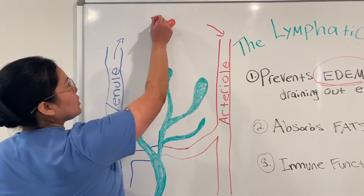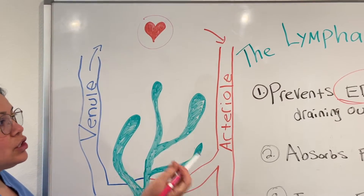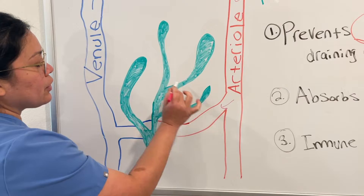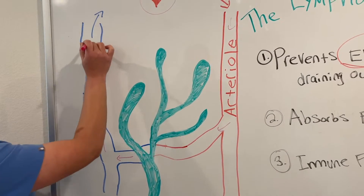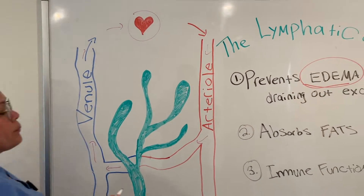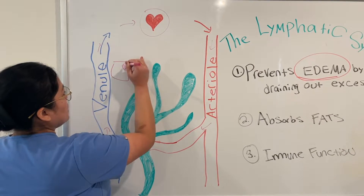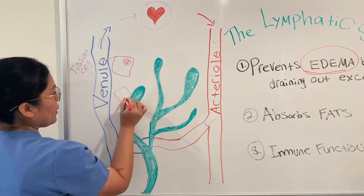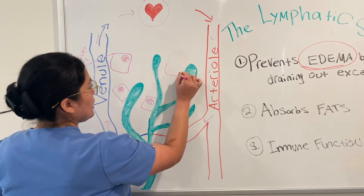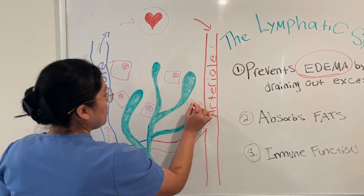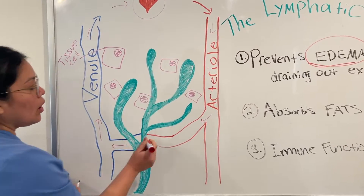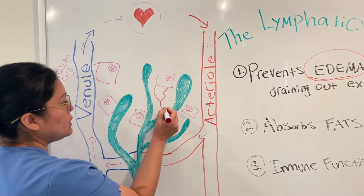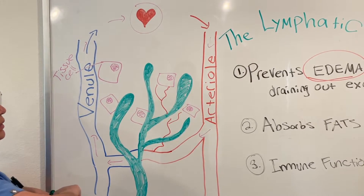Here is our heart. Coming out of the heart is oxygen-rich and nutrient-rich blood. It comes down your arterial and ends up in this capillary bed. Then blood leaves the capillary bed via your venule and goes right back to your heart. The whole point of the capillary bed is for blood to drop off oxygen and nutrients to these tissues, but also to pick up any waste products and CO2.